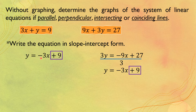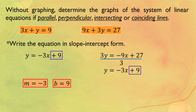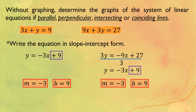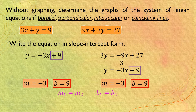The slopes are equal — both negative 3 — and the y-intercepts are also equal — both positive 9. So m₁ equals m₂ and b₁ equals b₂. When the slopes and y-intercepts are equal, they form coinciding lines or overlapping lines, and they fall under the dependent system.